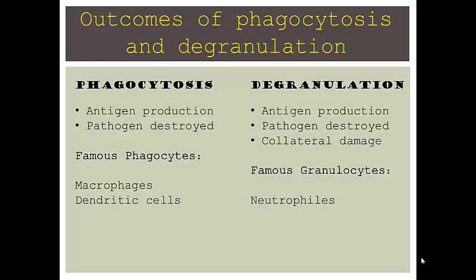The outcomes of phagocytosis and degranulation: in both phagocytosis and degranulation, antigens are produced and the pathogen is destroyed. Degranulation results in collateral damage of your own cells at the expense of destroying the pathogen. Some famous phagocytes are macrophages and dendritic cells, which are both white blood cells. And a famous granulocyte is a neutrophil.